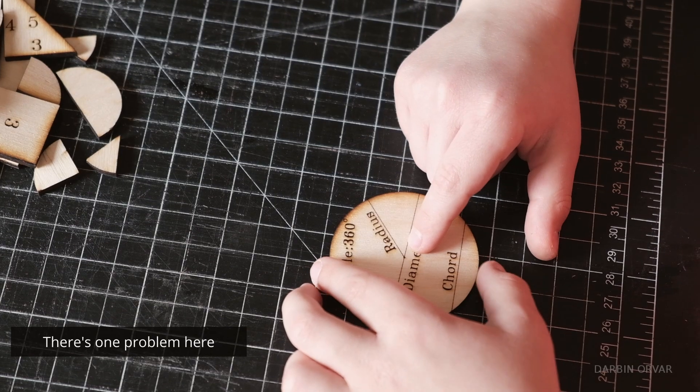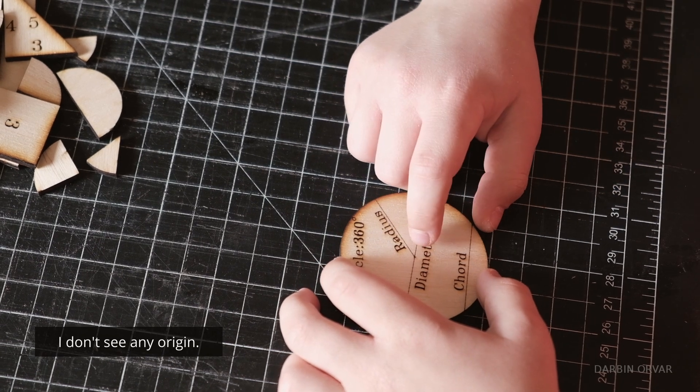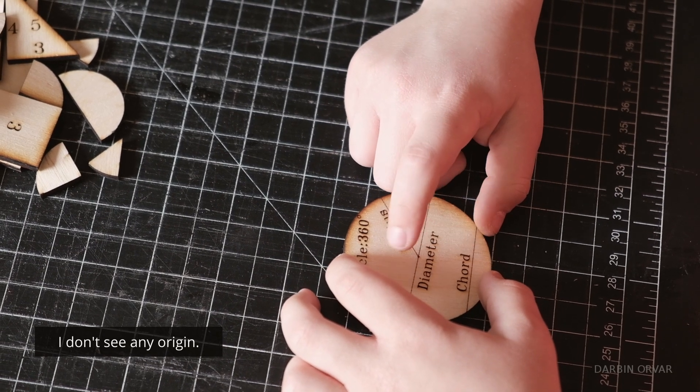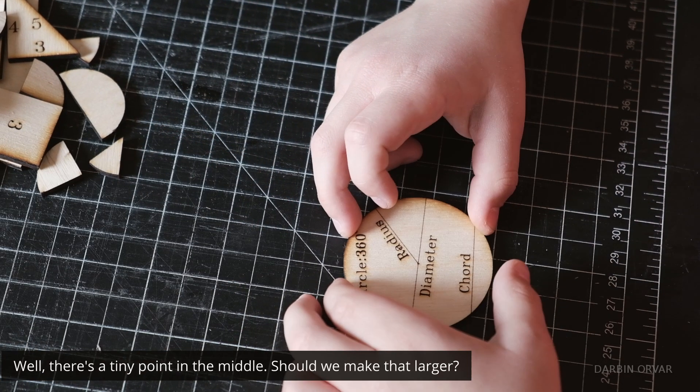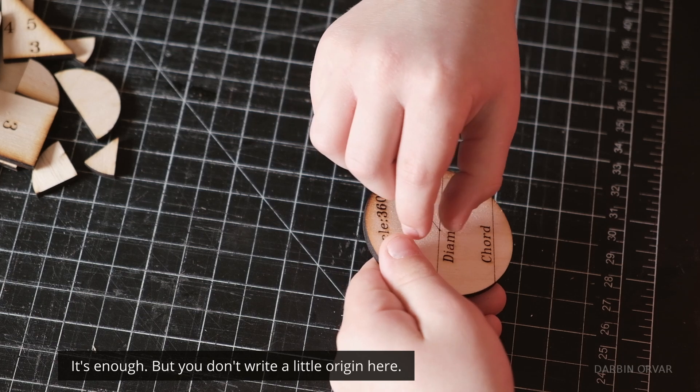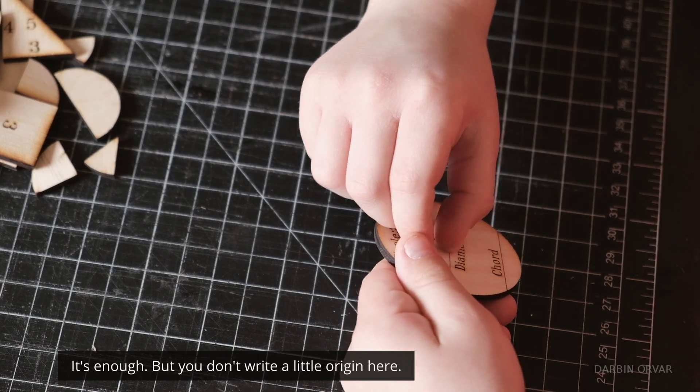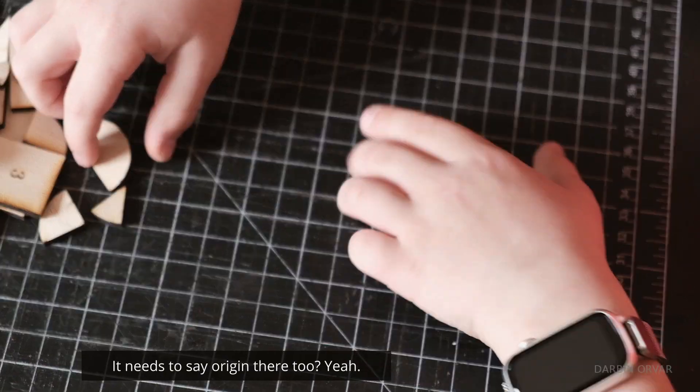There's one problem here. I don't see any origin. There's a tiny point in the middle. Should we make that larger? Is it too small? It's enough, but you don't write a little origin here? Oh, okay, like you don't say origin. It needs to say origin there too? Oh, okay.